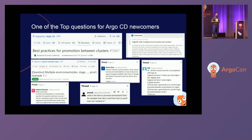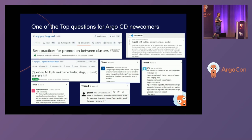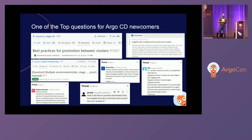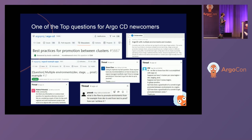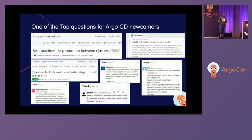Once you learn about Argo CD, install it, and finish the initial setup including security, one of the most common day-two questions is how you organize your GitOps repositories. I've been monitoring the Slack channels, GitHub discussions, and issues, and everybody's asking the same thing: how do I organize my repositories, or how do I do promotions across environments like QA, staging, and production?